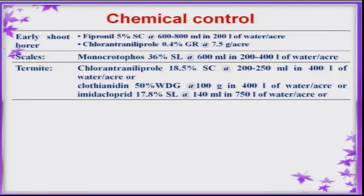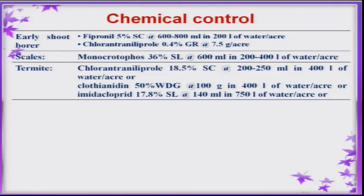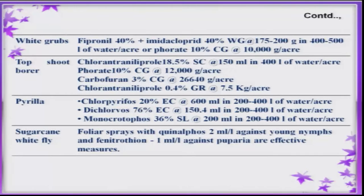After following all cultural practices and biological practices, if required, one can go for suitable chemical control measures. There are a number of chemicals available against each pest, to be used whenever necessary. In sugarcane, it is very difficult to manage insects with chemical control because going inside the canopy is very difficult. Hence, one should follow other methods of pest control first, and go for chemical control only when necessary.